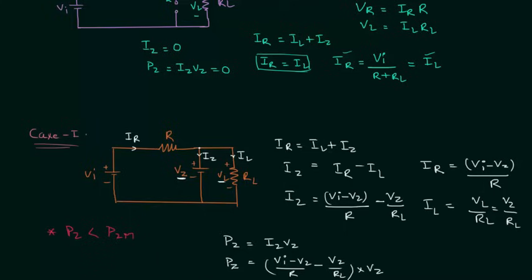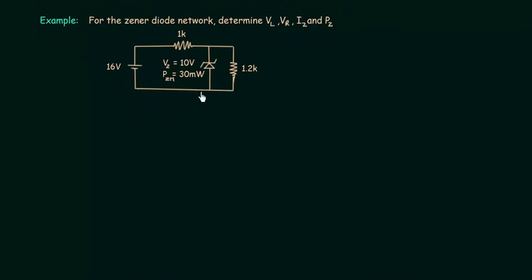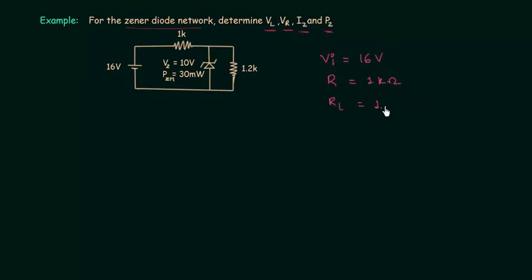Now I will solve a numerical problem to make things more concrete. In this example, a Zener diode network is given and we have to determine VL, VR, IZ, and PZ. The given values are: VI equals 16 volts, R equals 1 kilo-ohm (current limiting resistor), RL equals 1.2 kilo-ohms, VZ equals 10 volts, and PZM equals 30 milliwatts.